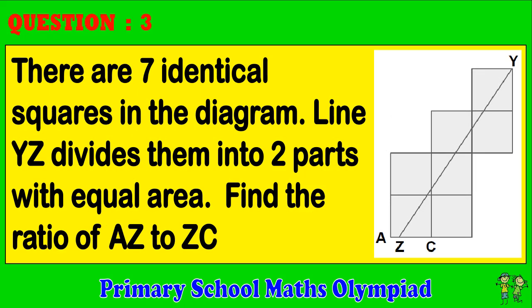Question 3: There are seven identical squares in the diagram. Line YZ divides them into two parts with equal area. Find the ratio of AZ to ZC.